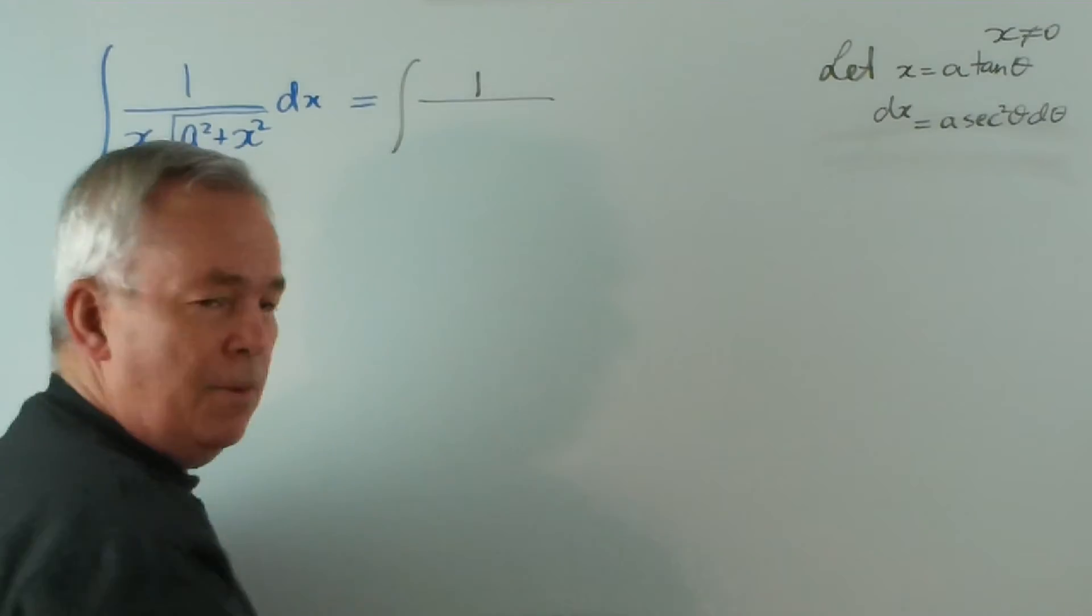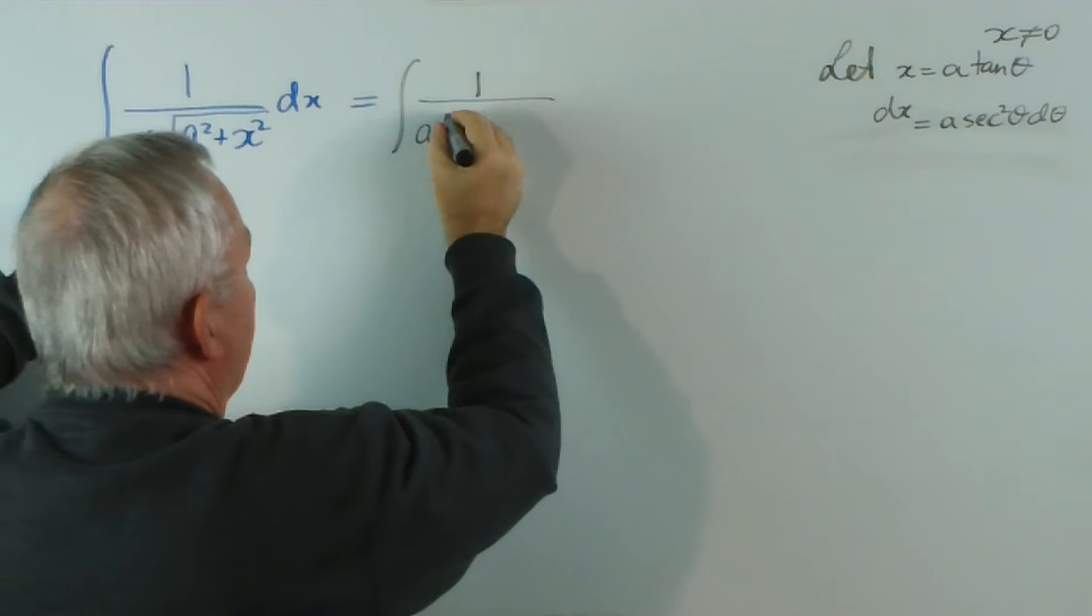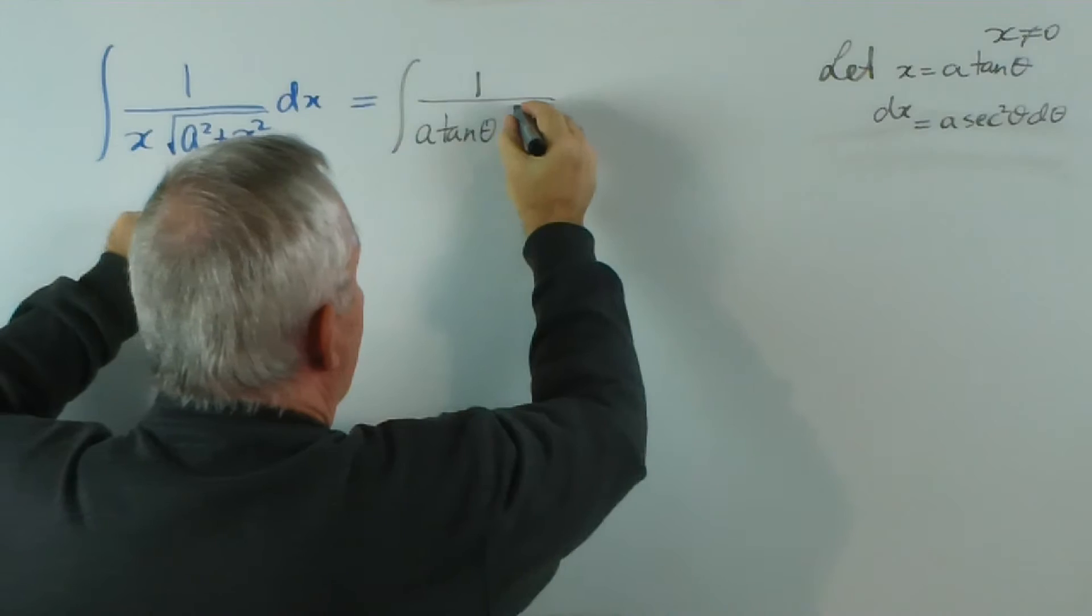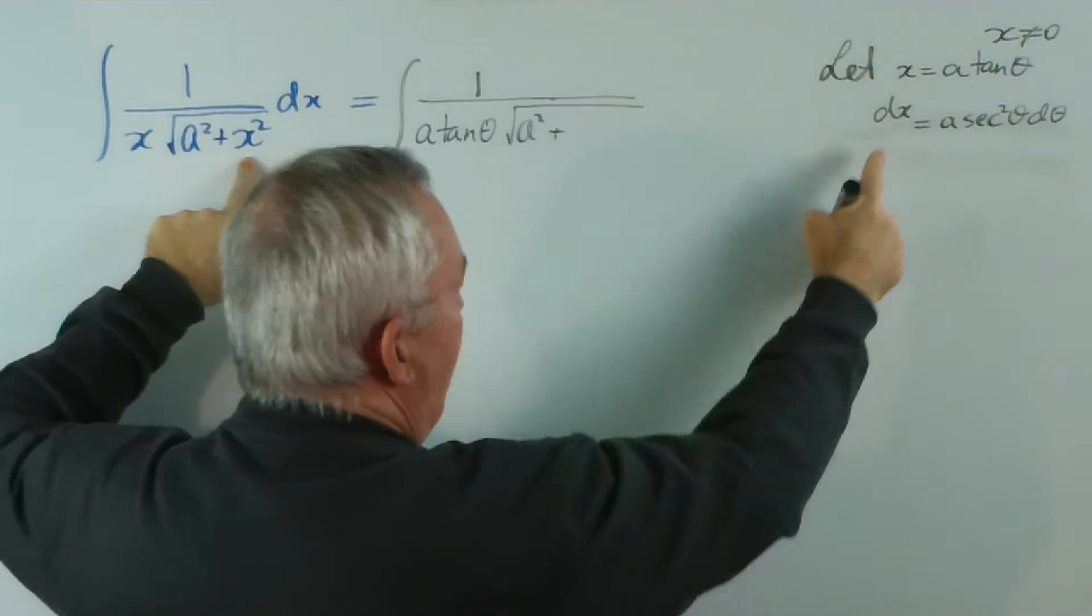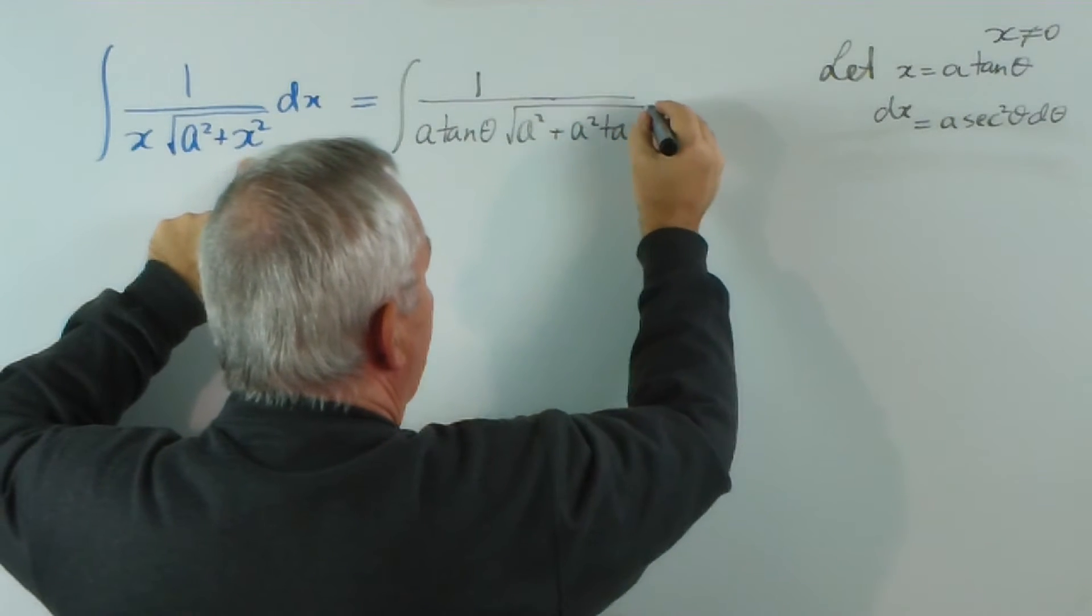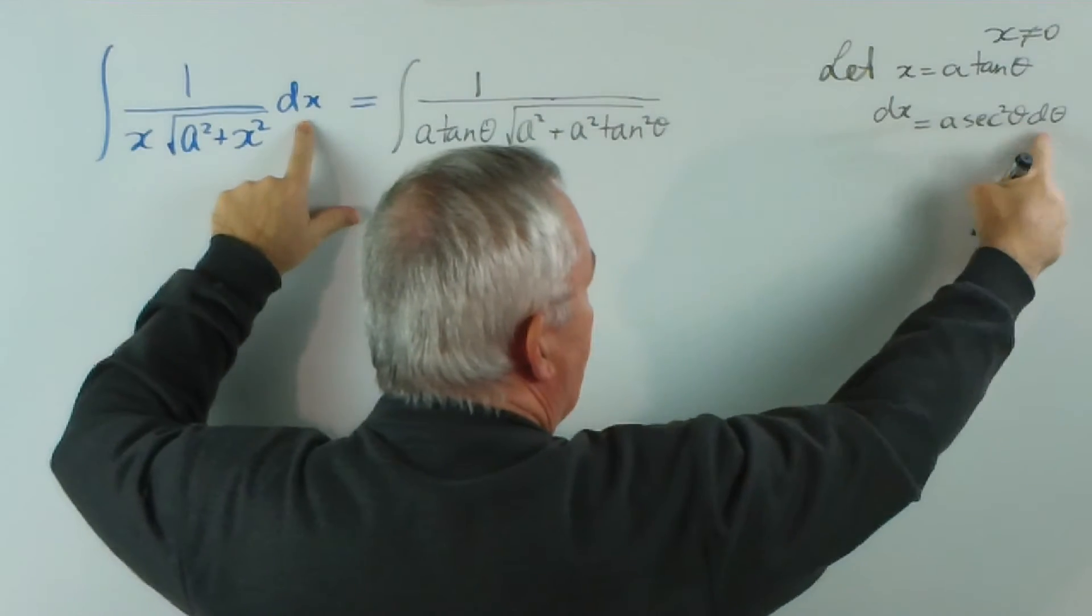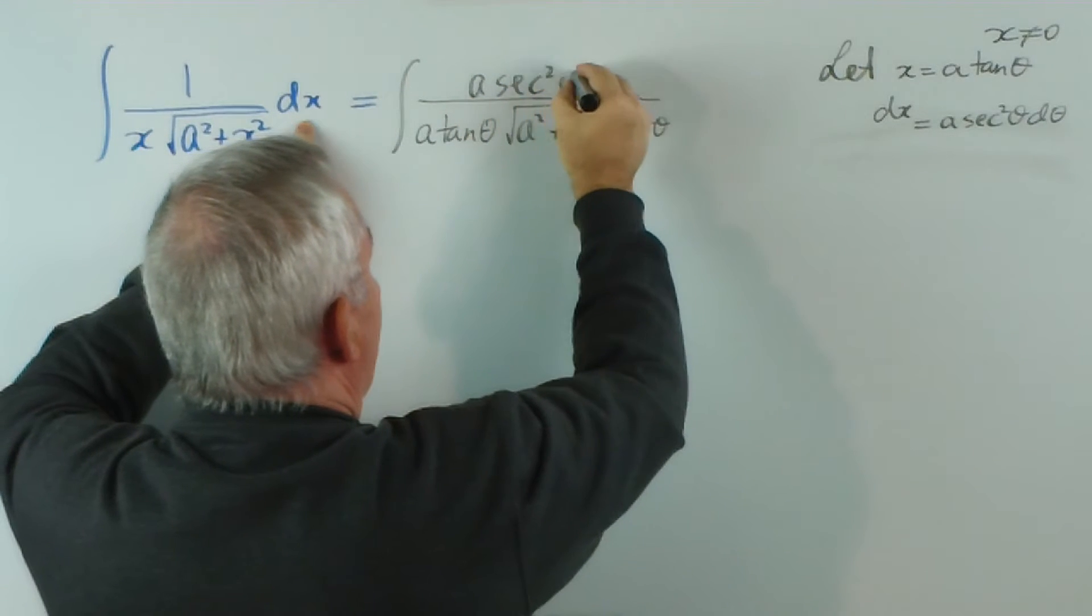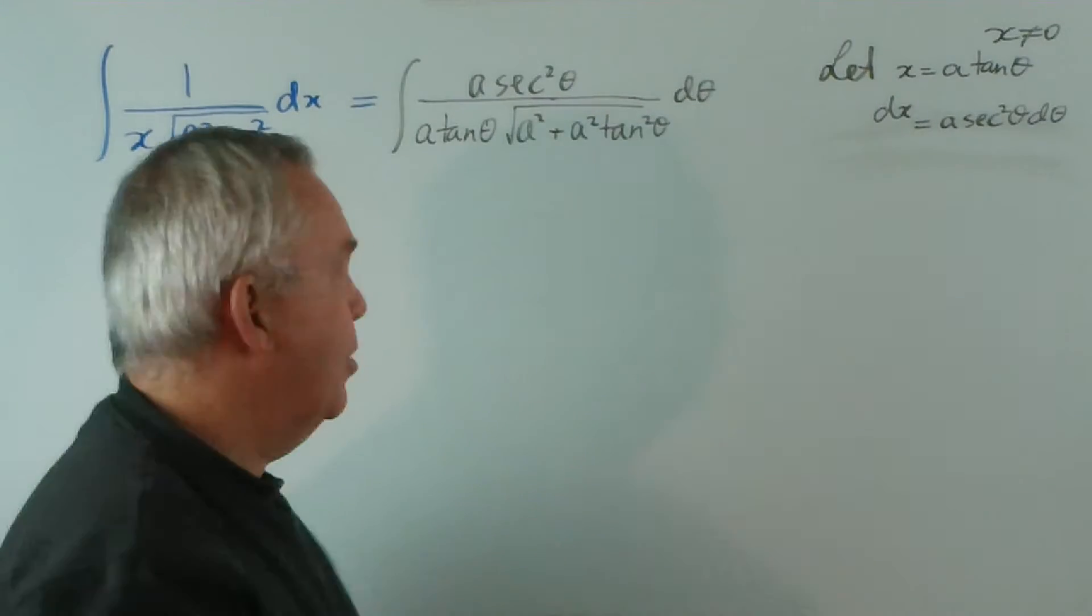And let's see what our integral becomes. Well, there will still be a one on the top. The x is going to be replaced by a tan theta. And this radical is going to become the square root of a squared plus x squared, which is going to be a squared tan squared theta. And the dx is going to become a sec squared theta d theta. So I'm going to put the a out the front, a sec squared theta d theta. So far, so good.